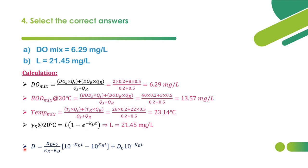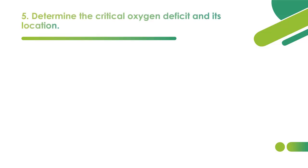An additional important formula: oxygen deficit at any time t is D = [kd × L₀ / (kr − kd)] × (10^(−kd·t) − 10^(−kr·t)) + D₀ × 10^(−kr·t). This formula is important for finding the deficit at any time t in the Streeter-Phelps framework.